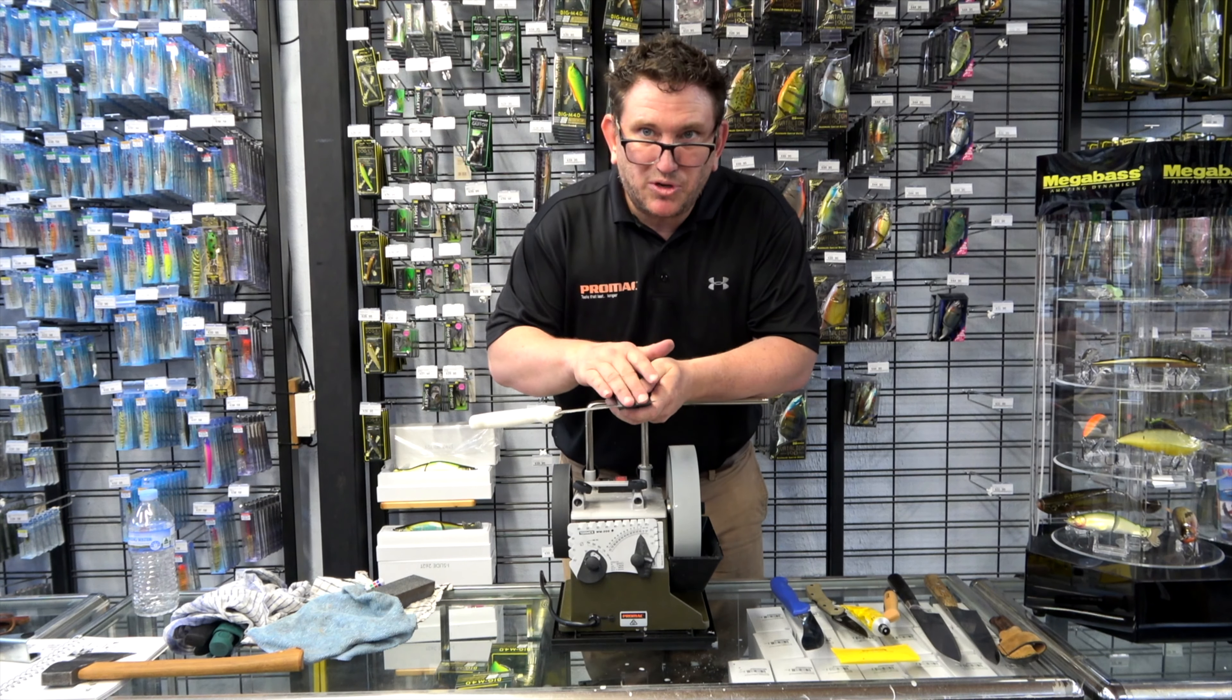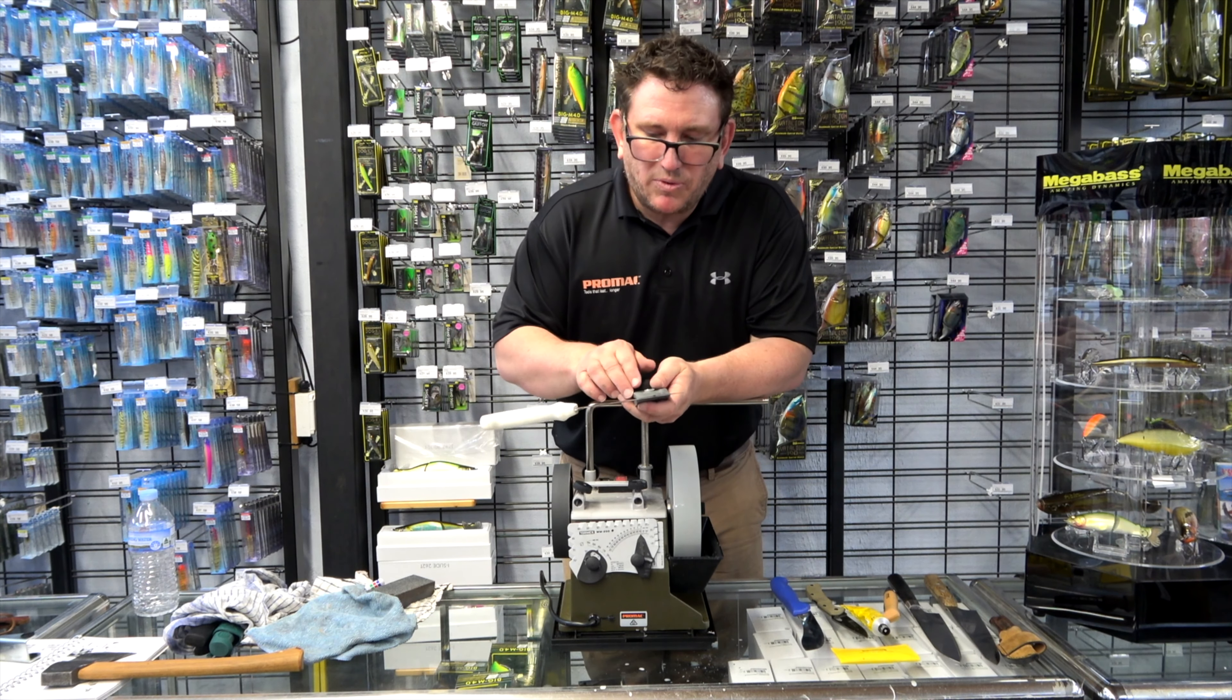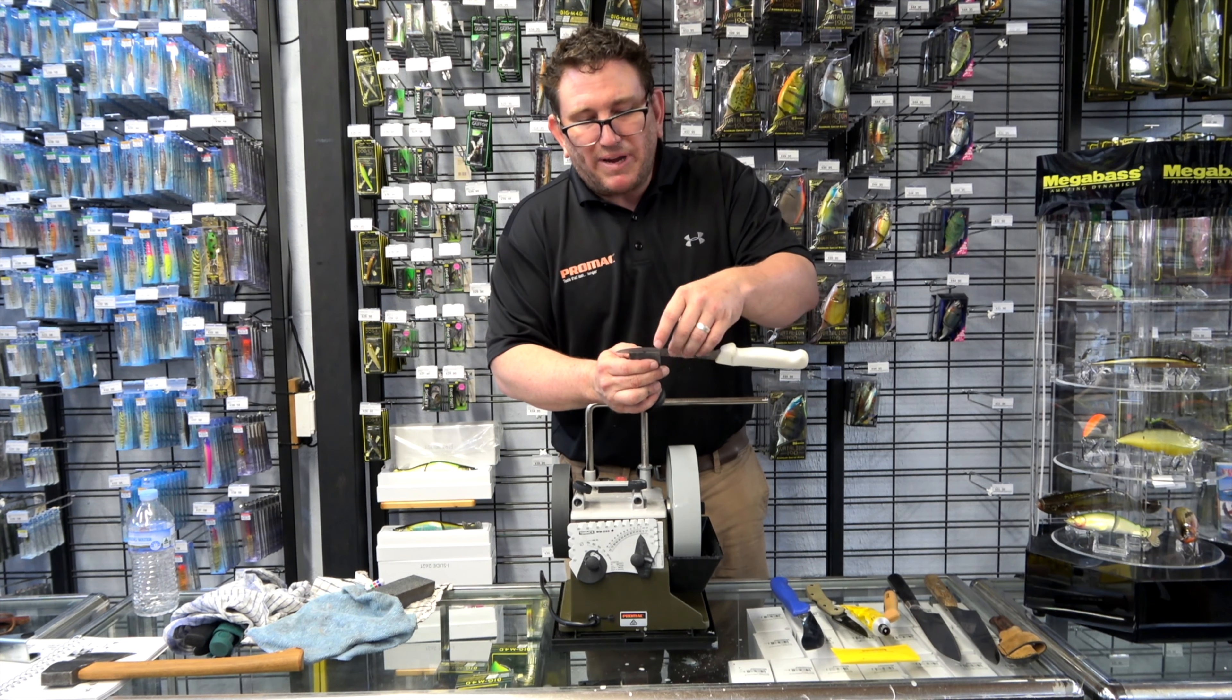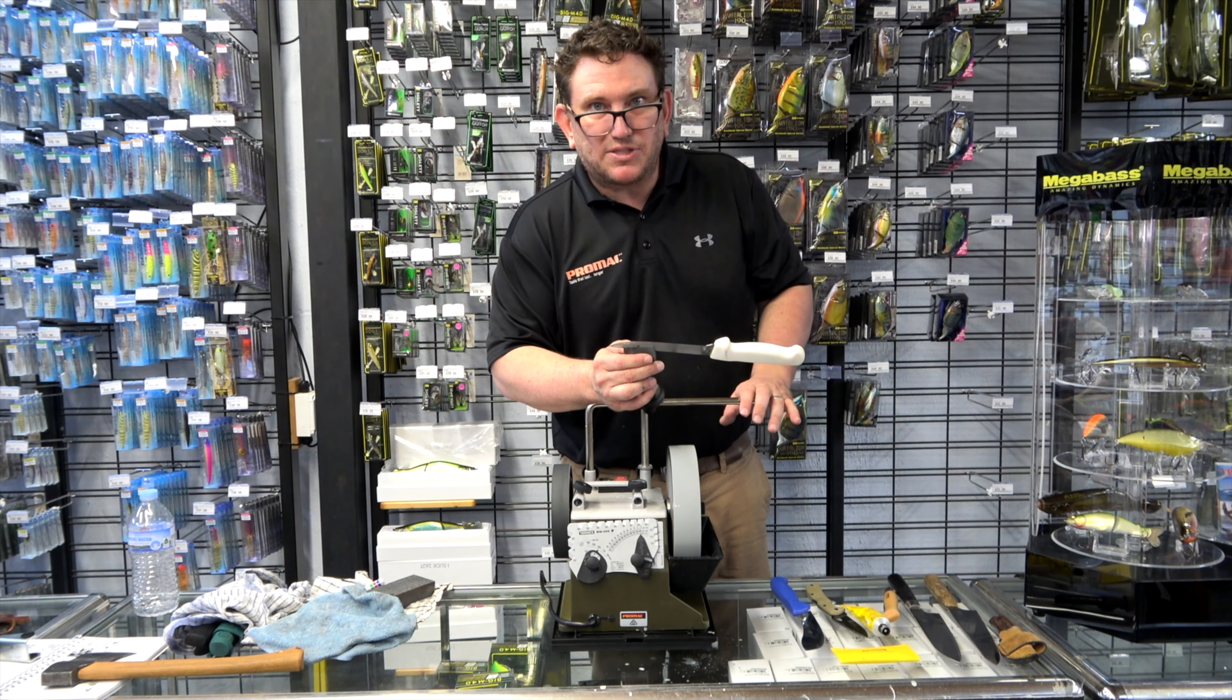Alright, now that we've created our burr on the first edge, what we're going to do is flip it over. And we're going to repeat the process on the secondary side. We're going to make sure that visually both sides are symmetrical.